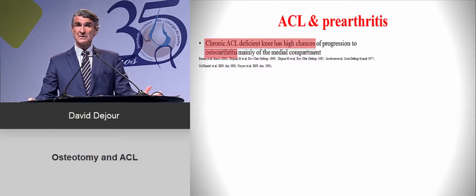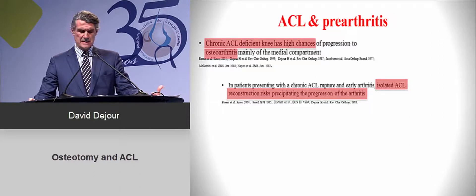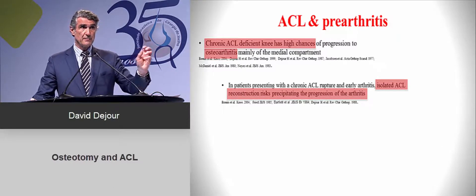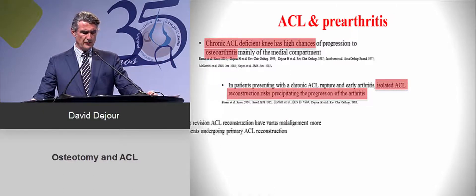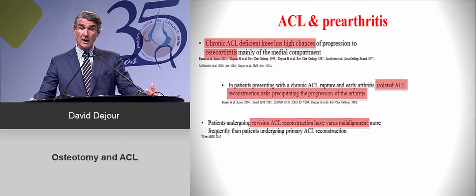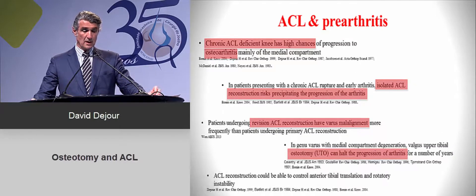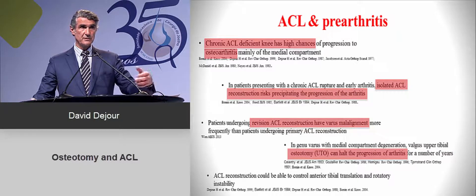In the case of ACL plus arthritis, the literature clearly shows that chronic ACL increases the risk of osteoarthritis, and if you do an isolated ACL reconstruction, you may correct the laxity but will probably increase arthritis. Most patients who undergo revision ACL reconstruction have above-normal varus deformity, meaning osteotomy may be a good way to prevent the progression of arthritis. These articles are very important in highlighting that you sometimes need to correct axial alignment.